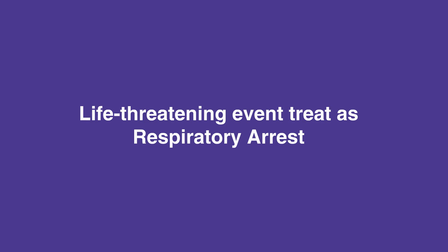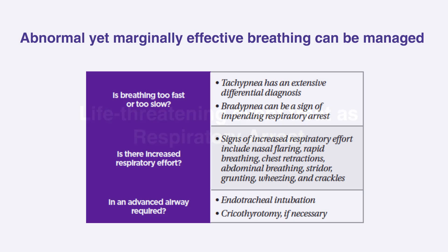However, if it's abnormal yet marginally effective breathing, it can be assessed and managed by determining the breathing being too fast or too slow. Tachypnea is abnormally fast breathing and has an extensive differential diagnosis, while bradypnea, or abnormally slow breathing, can be a sign of impending respiratory arrest.